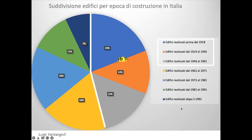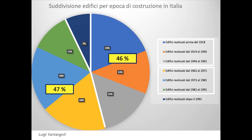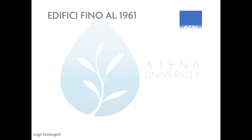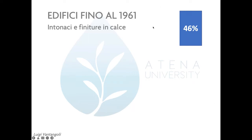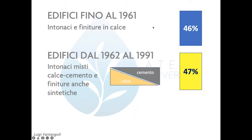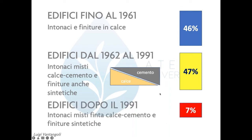Vediamo le finiture per le facciate. Il 46% degli edifici in Italia è stato realizzato prima del 1961, un altro 47% tra il 1962 e il 1991, e solo un 7% dal 1991 ad oggi. Statisticamente, negli edifici fino agli anni 60 troverò intonaci e finiture soprattutto in calce; tra il 1962 e il 1991 intonaci misti di calce e cemento e finiture sintetiche; dopo il 1991 tutti intonaci misti, finta calce, cemento e finiture sintetiche.